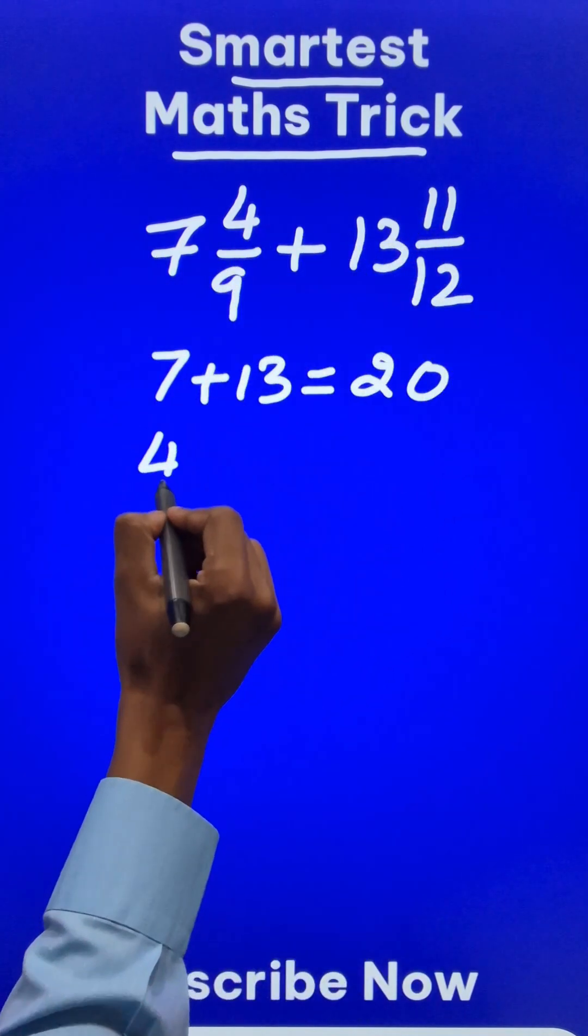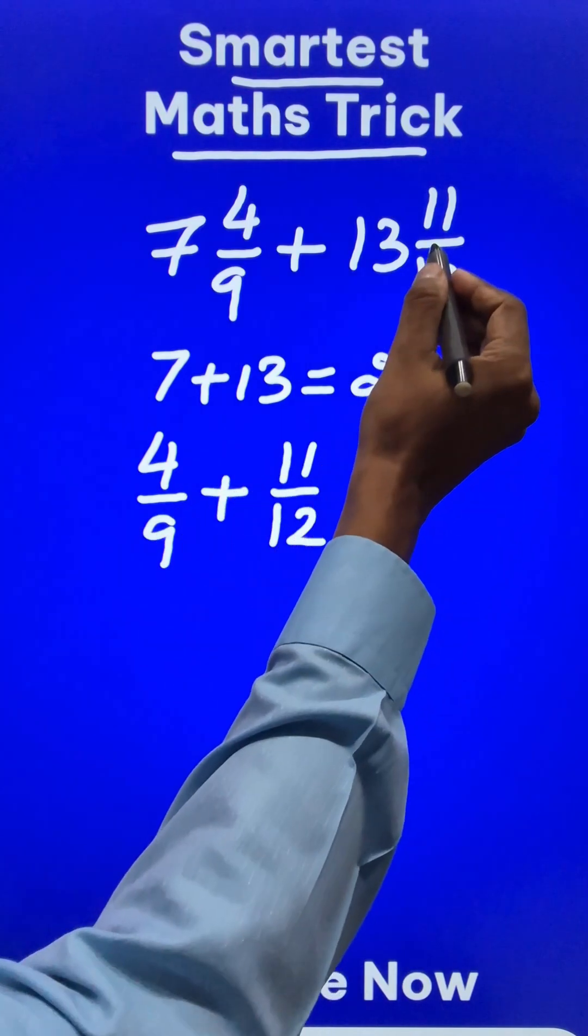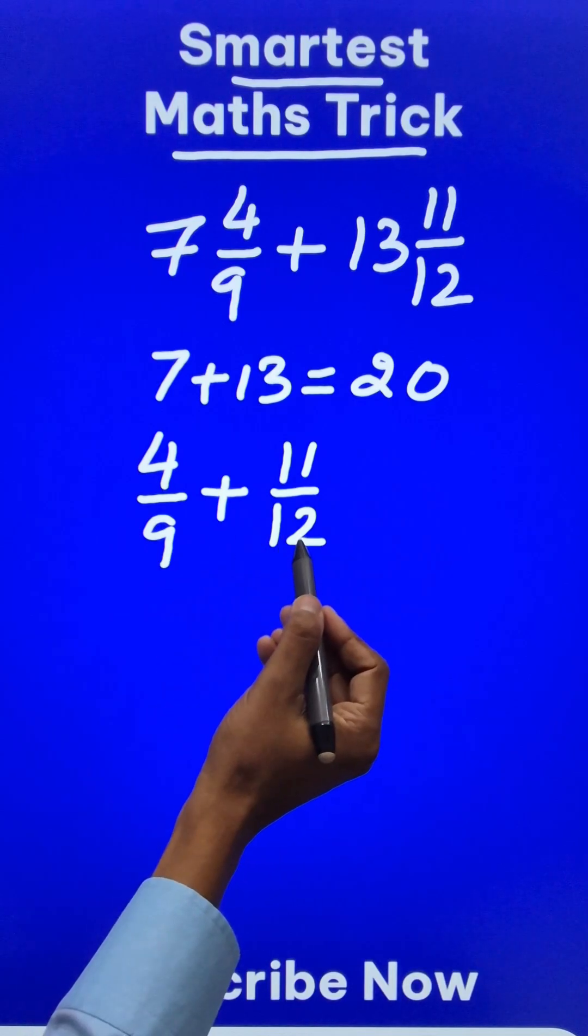And what about the fractional parts? 4/9 in the first case and 11/12 in the second case. Here 9 and 12, they have a common factor of 3 between them.